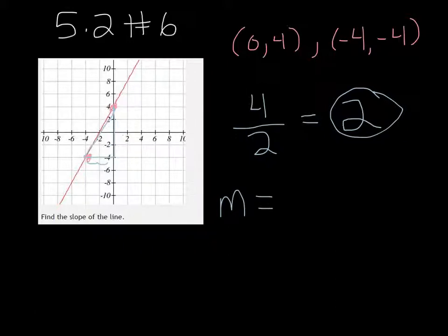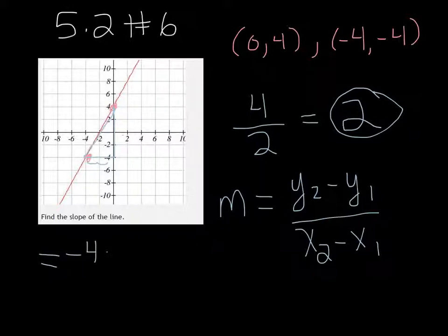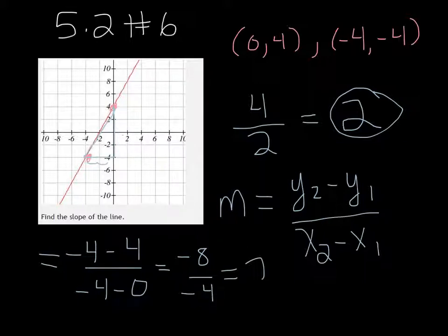m equals (y2 minus y1) over (x2 minus x1). So with the points that we picked, that would be (-4 minus 4) over (-4 minus 0). So that's -8 over -4, which is also 2.